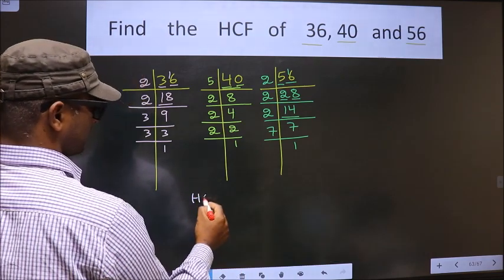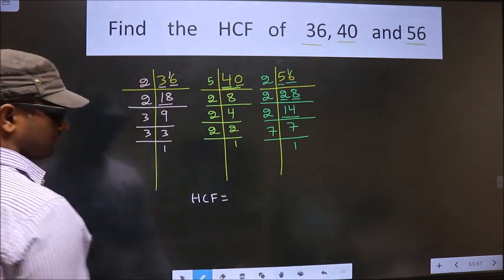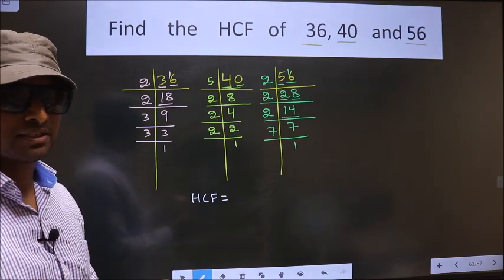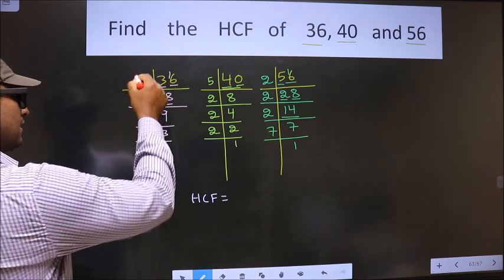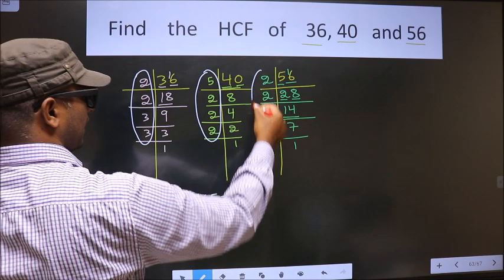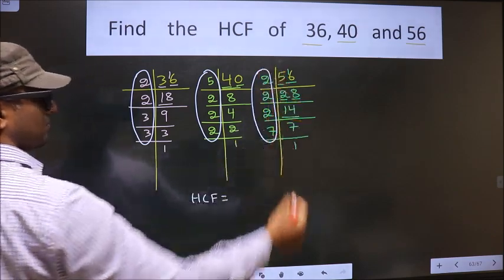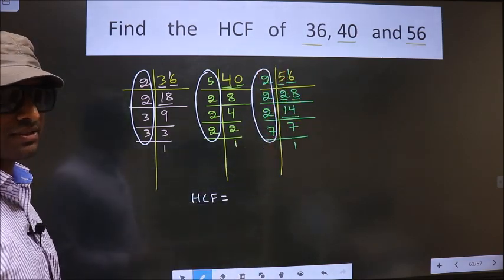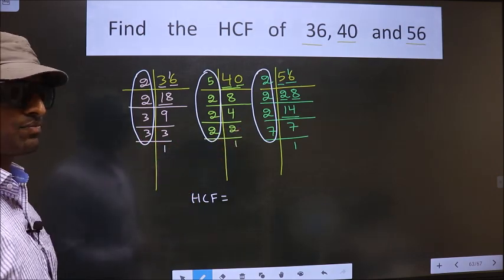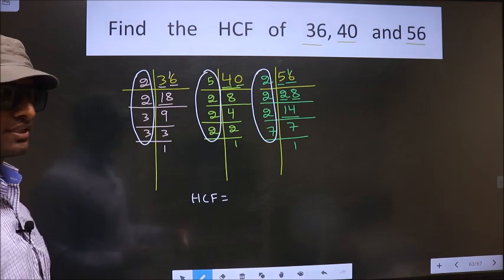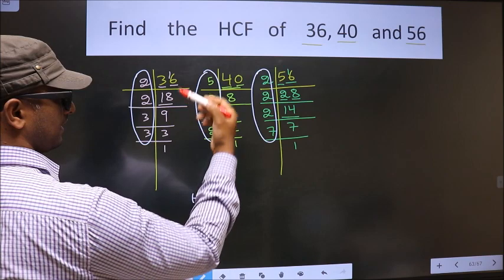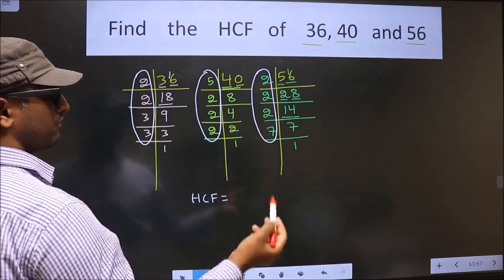So now our HCF is the product of numbers that are present in all three factorizations — here, and here, and also here. We should find the numbers that are present in all three places.